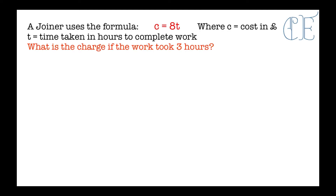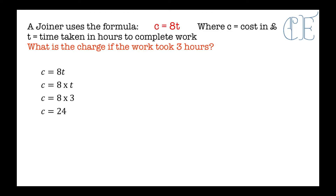A joiner uses the formula c equals 8t, where c equals the cost in pounds and t is the time taken in hours to complete the work. What is the charge if the work took 3 hours? It sounds like a lot of information, but just concentrate on the formula: c equals 8t. That means c equals 8 times t, and t is 3 hours, so c equals 8 times 3, which is 24. The cost would be 24 pounds.